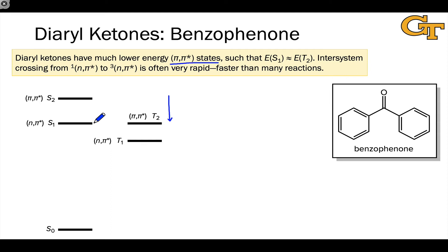This means that we can have almost barrierless intersystem crossing from the S1 state to the T2 state occurring in these diaryl ketones. And this is very rapid. Again, El-Sayed's rules.